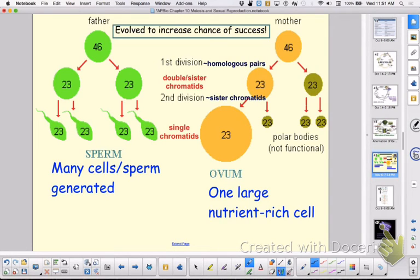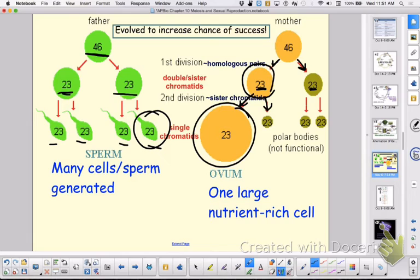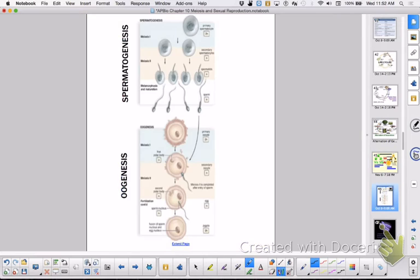So spermatogenesis, you will end up making four sperm. Your goal is numbers. Females were quality over quantity. So we do cytokinesis unevenly. The chromosome number is right, but we keep more of the cytoplasm, more of the organelles in one large ovum. And then unequal again, so we have this one large egg to hook up with this disproportionately large sperm. These three things here are called polar bodies, not functional. They'll just disintegrate. And there's a picture like this in your book as well.